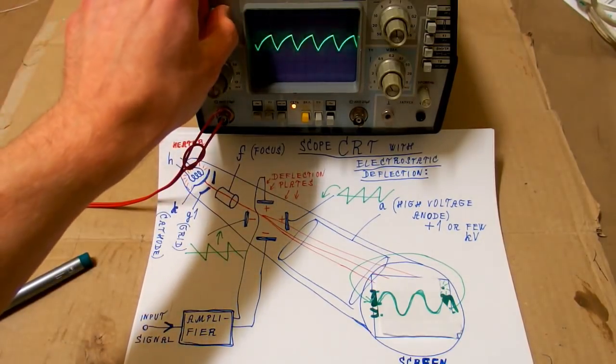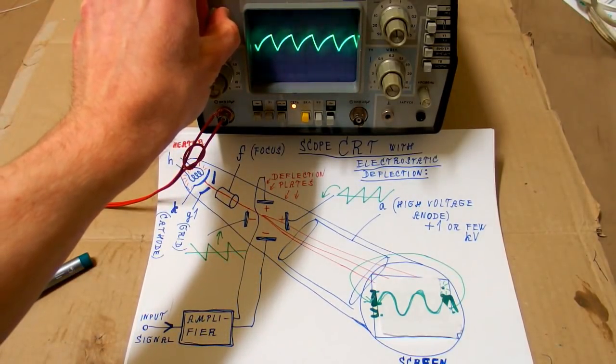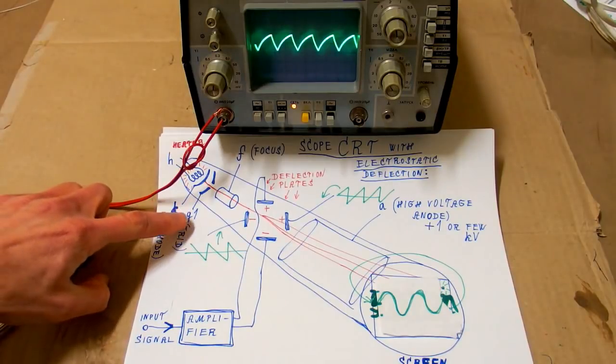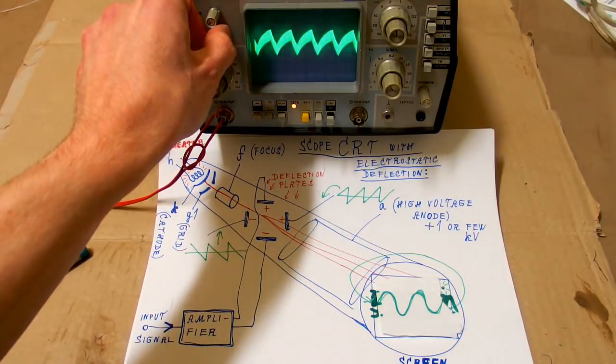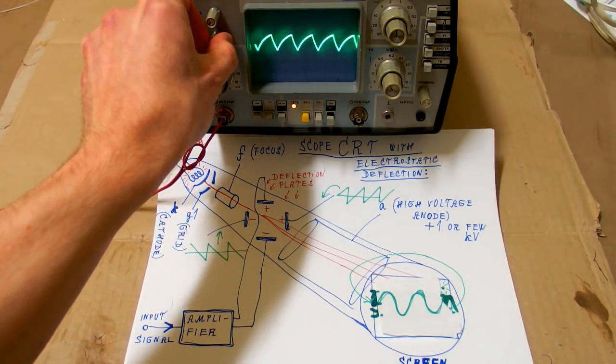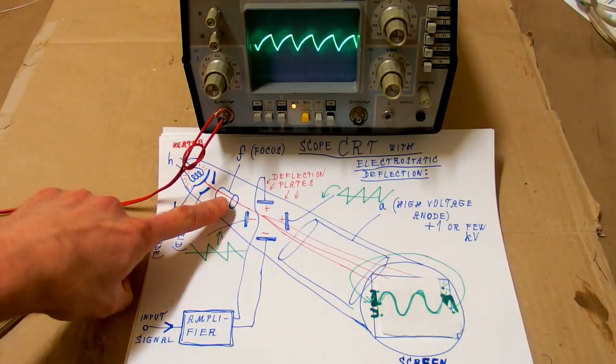So the brightness knob is changing the voltage on this cathode or grid. The focus knob changes the voltage on this focusing electrode.